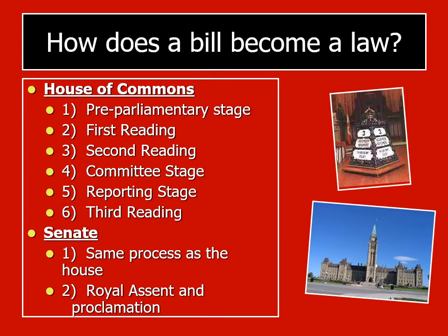How does a bill become a law? There is a lengthy process in both the House of Commons and the Senate. This process has many different steps to make sure that the law is in compliance with the Constitution and the Charter of Rights and Freedoms. If the process was too short, laws could be made too easily, which would lead to abuses of power. However, this entire process is the result of past British monarchs abusing their power and making bad laws.